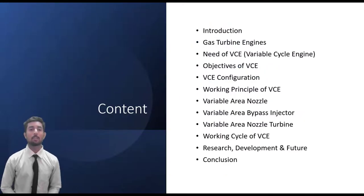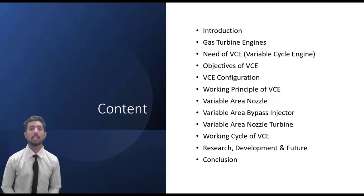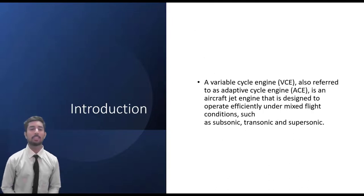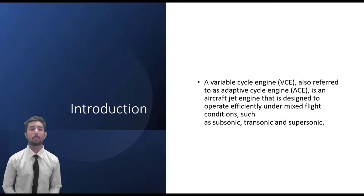This is the table of contents. We will start our discussion with the introduction, covering what is a variable cycle engine, then we will see certain parameters associated with it. A variable cycle engine, also referred to as an adaptive cycle engine, is an aircraft jet engine designed to operate efficiently under fixed flight conditions such as subsonic, transonic, and supersonic.